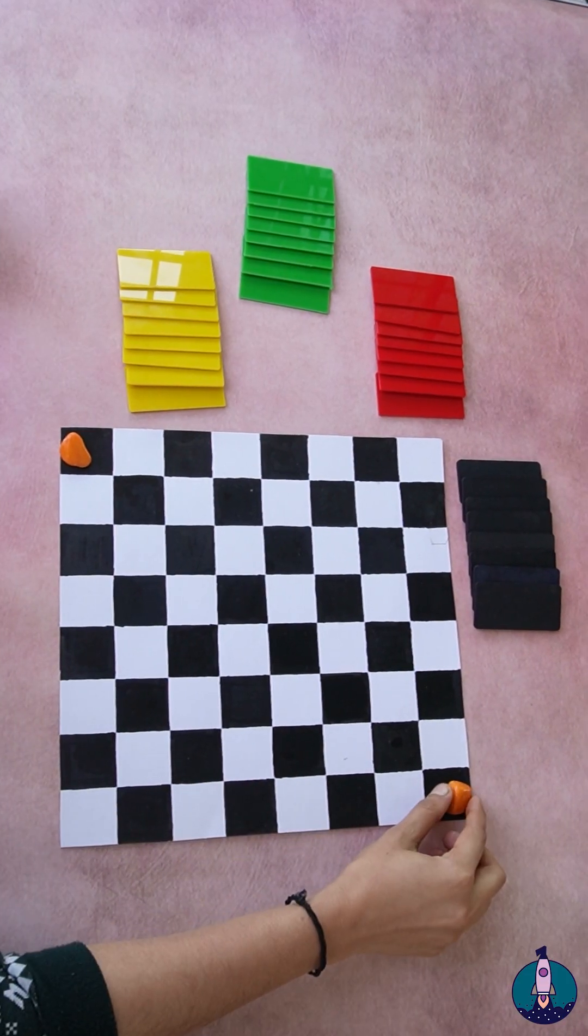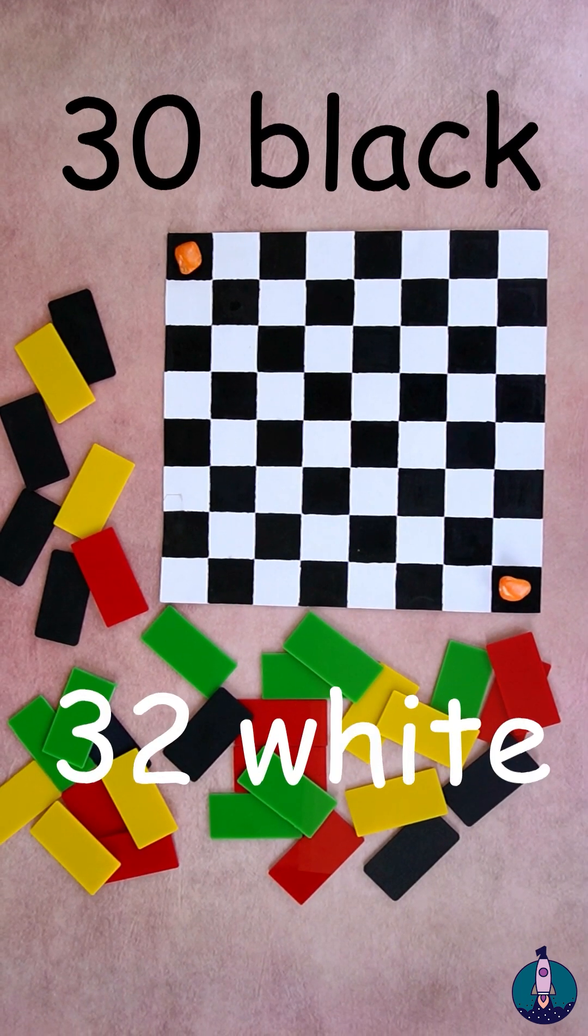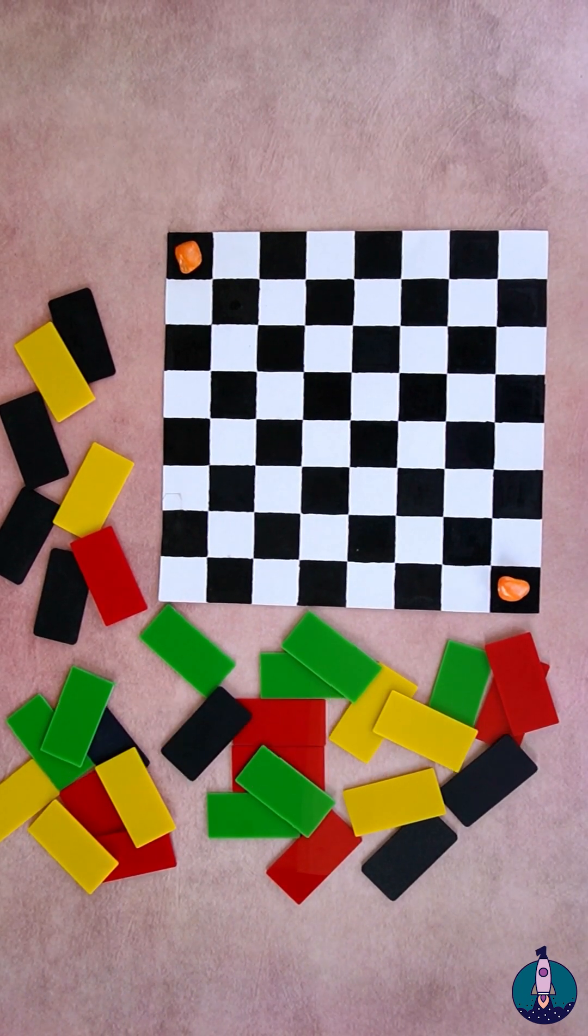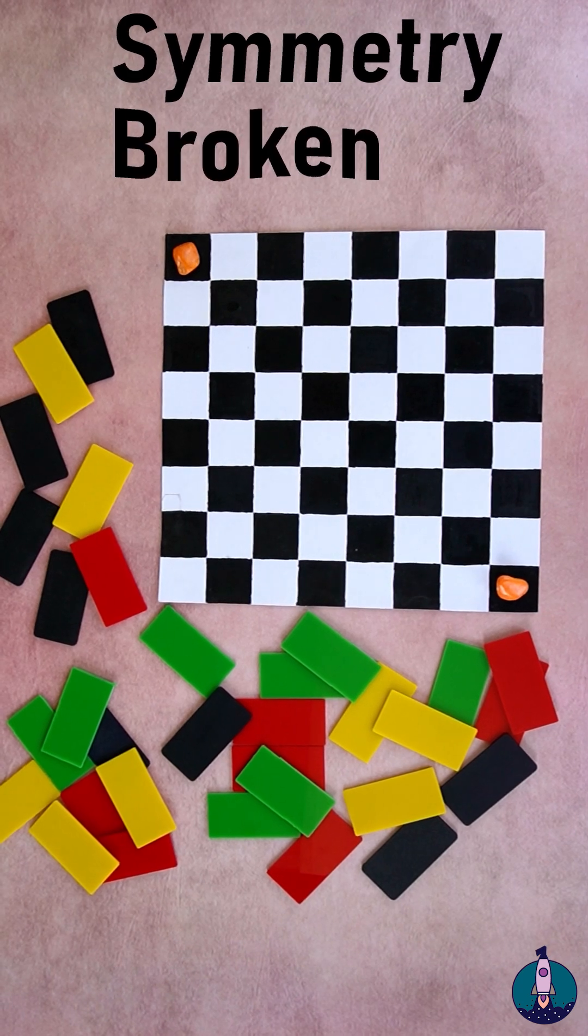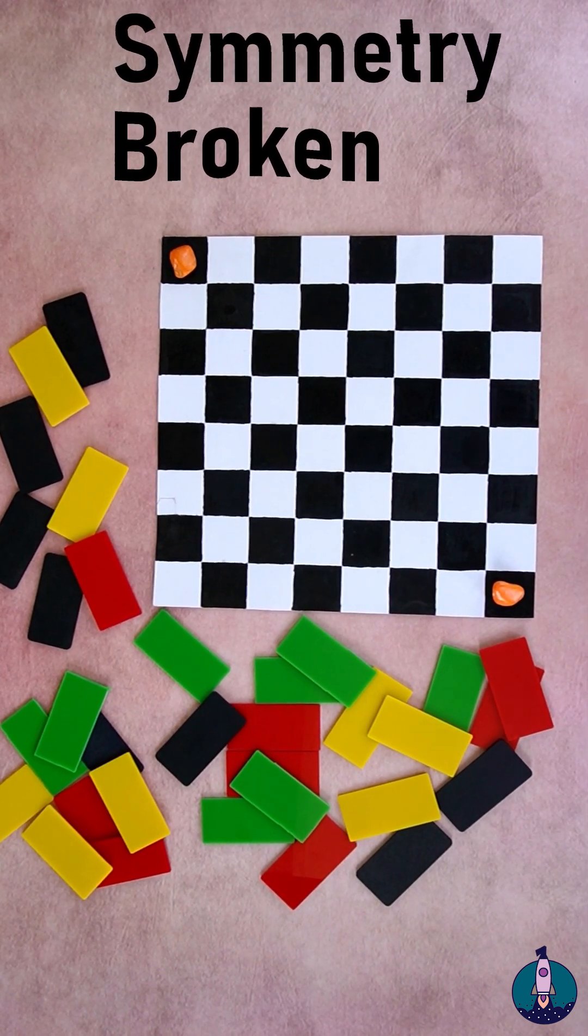But with opposite corners blocked, there are only 30 black and 32 white squares left on the chessboard. The symmetry has been broken. There's no way anyone can solve this problem.